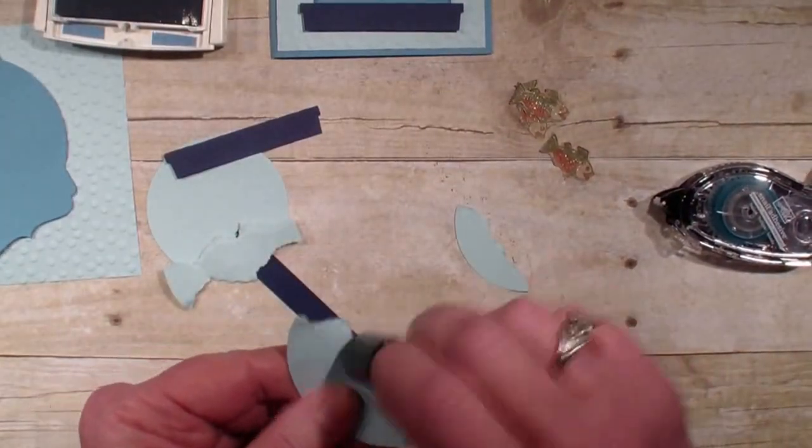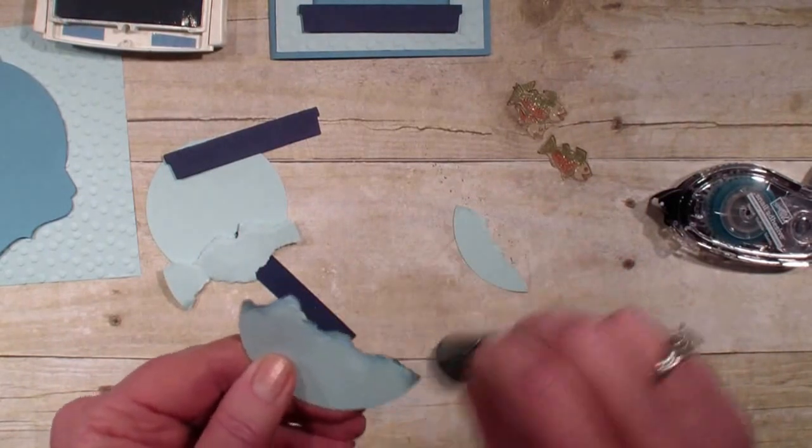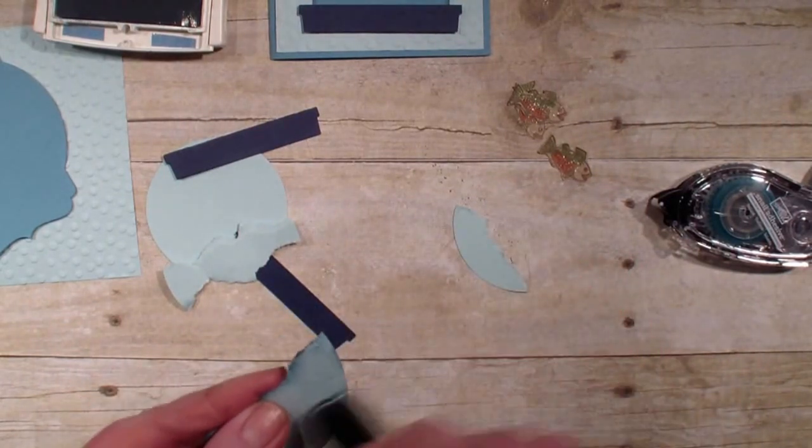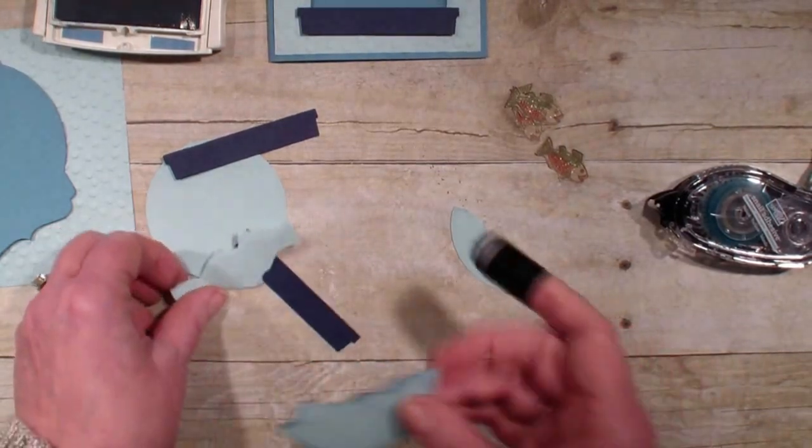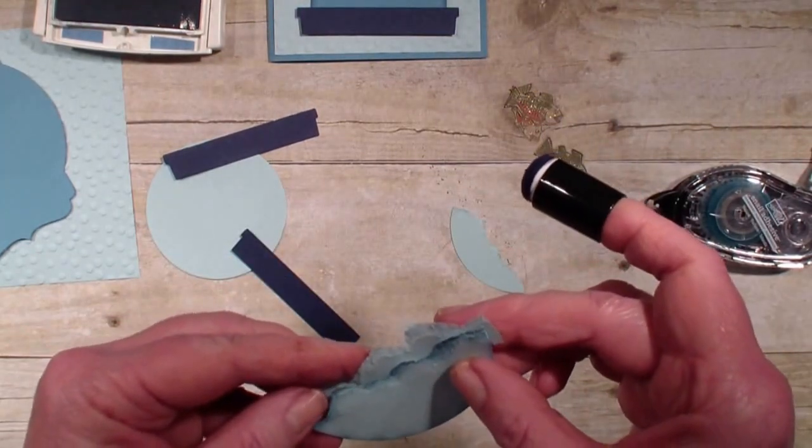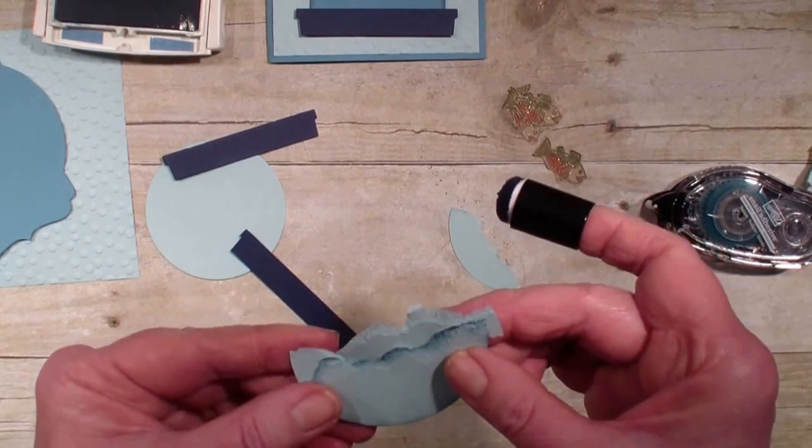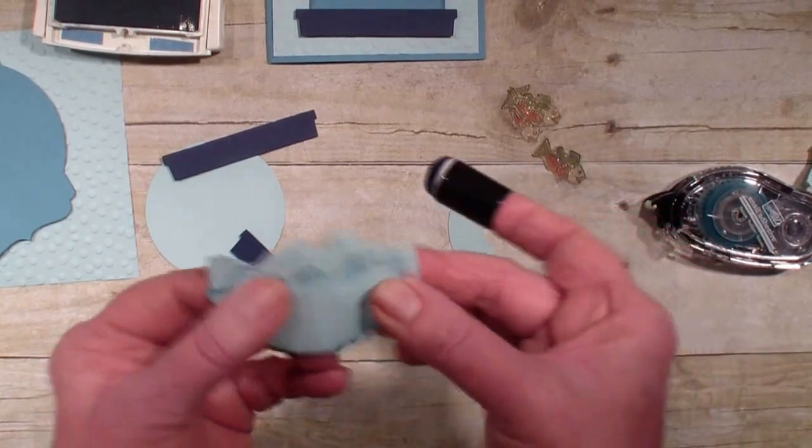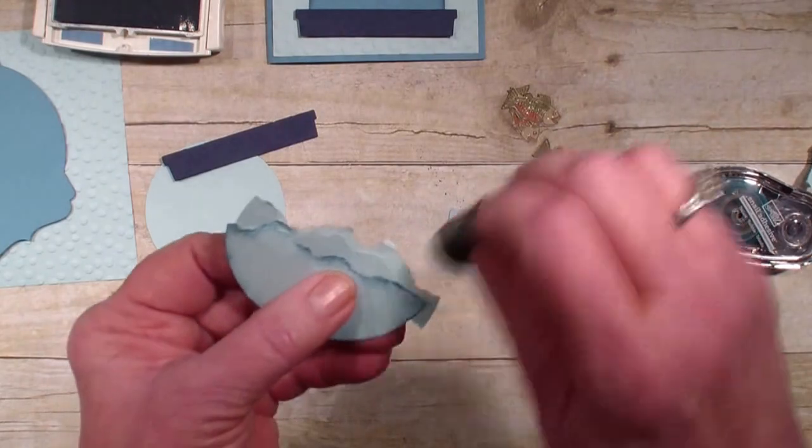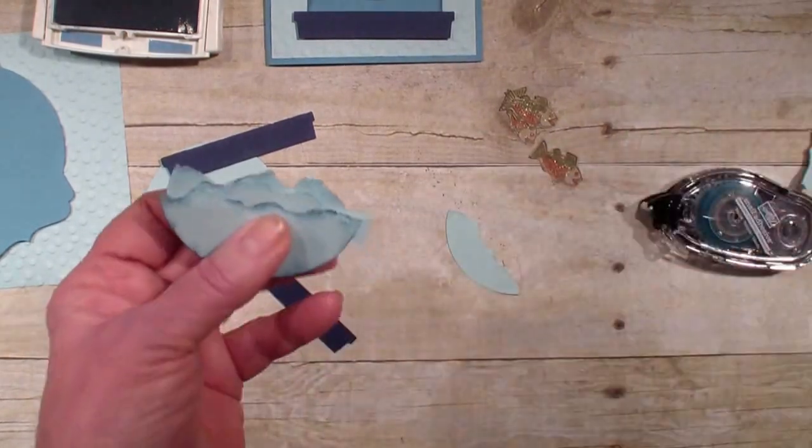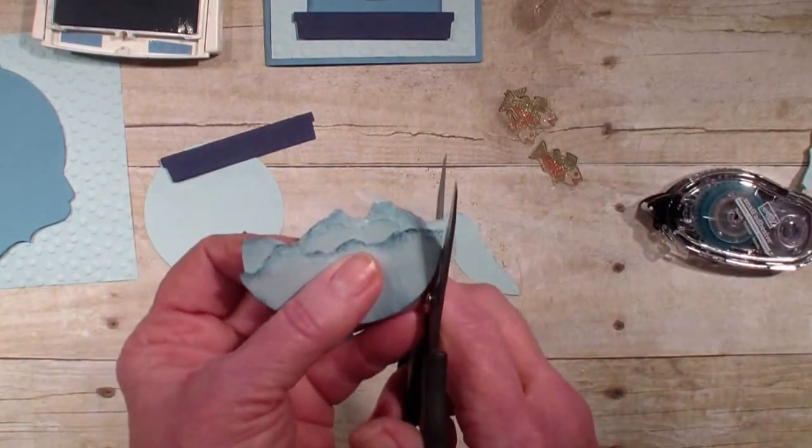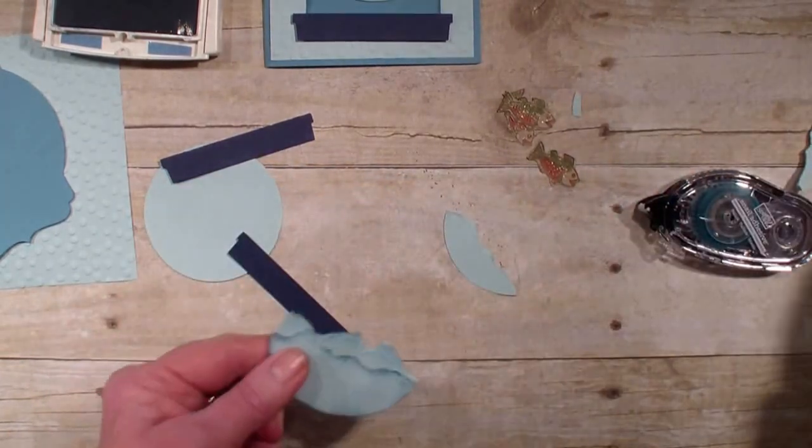I've sponged so those waves look a little bit darker, and you can just add some of that Marina Mist there. So then I'm going to add my waves. Again, you can see that it's off a little bit, but that doesn't matter. We'll just take our scissors and go in there and do a little snip.